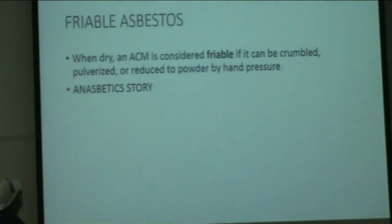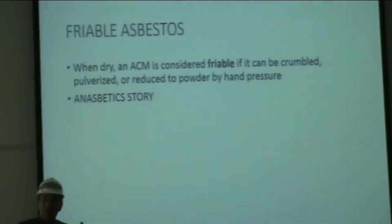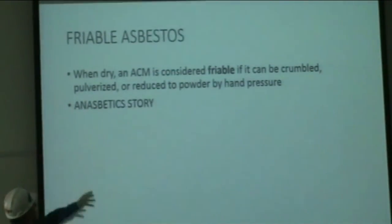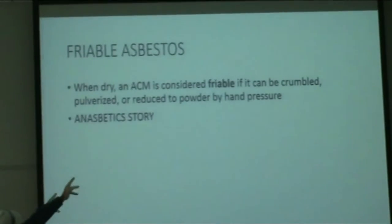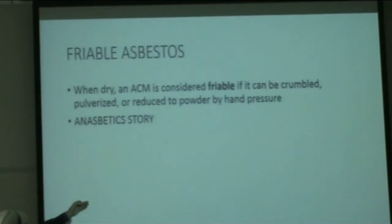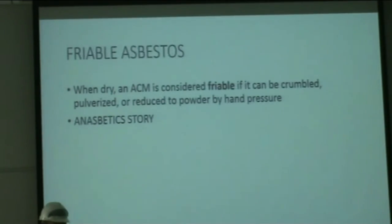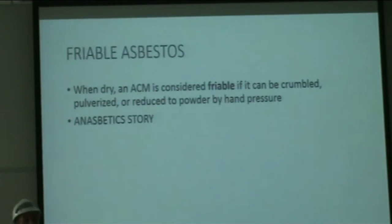We have something called friable asbestos. Friable means you can crush it with your hands — pulverize it, make it powdered by hand pressure. That's called friable, and it's actually the worst kind because it can go into the air.